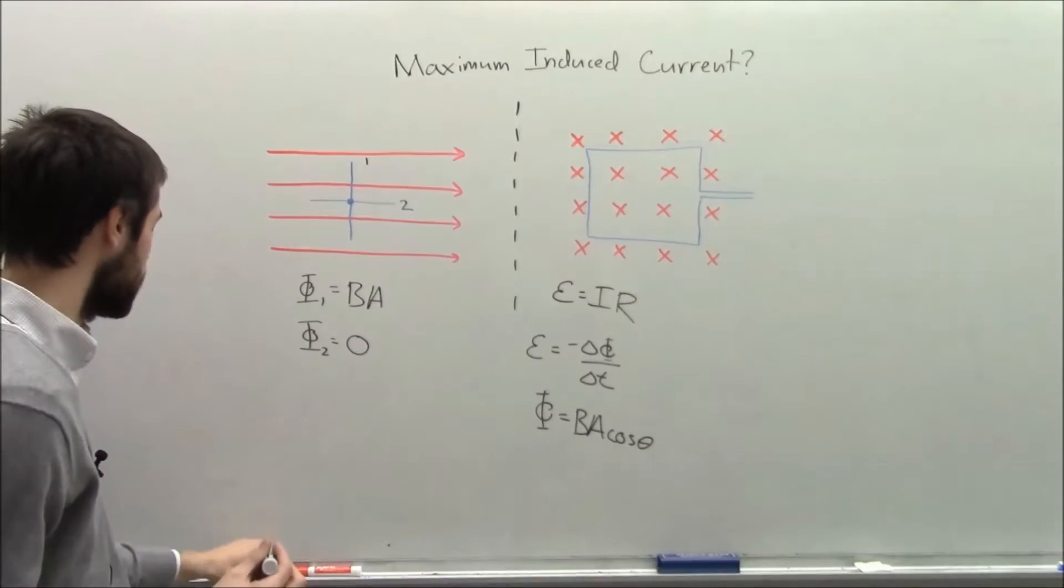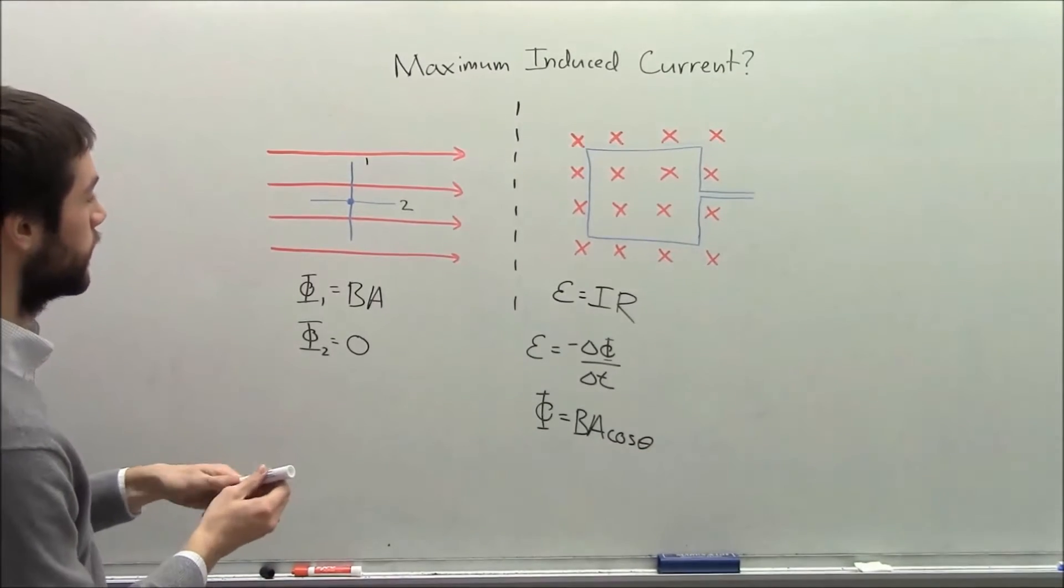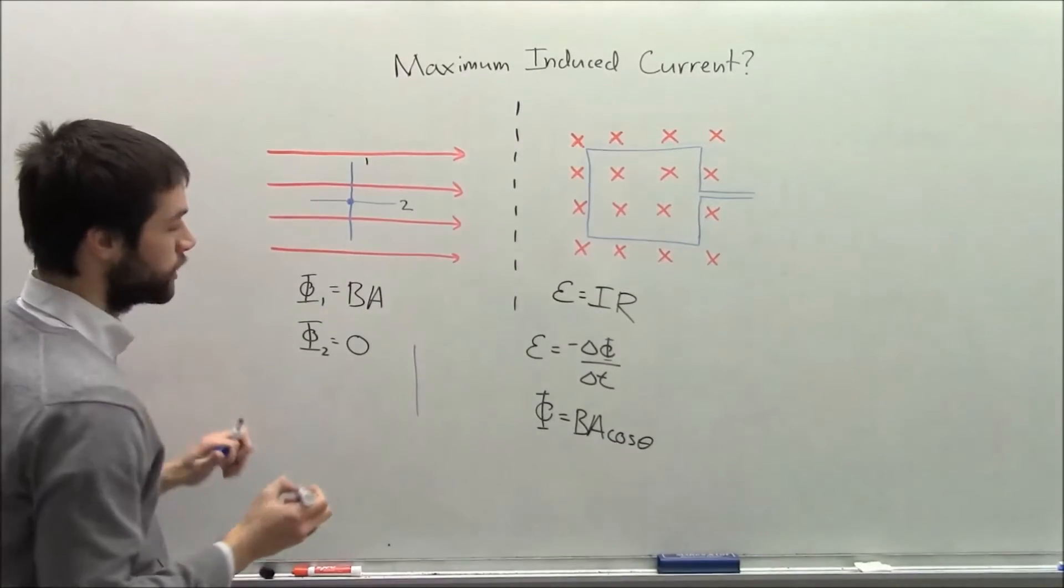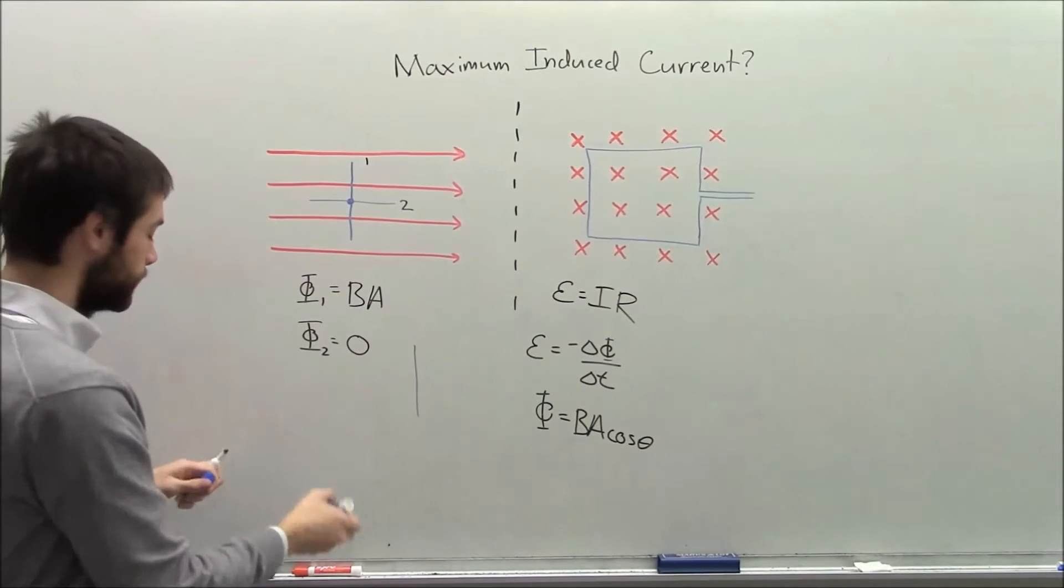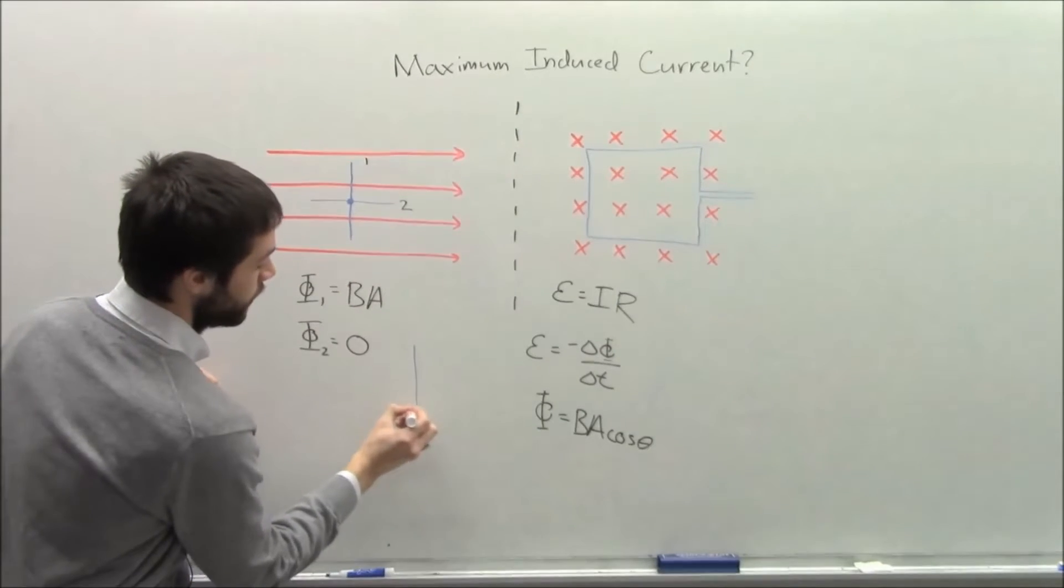And this is a little funny, but let's draw case one, sort of separate from everything else. So here's our loop. Remember the loop is coming out of the board like this. And here's our field.